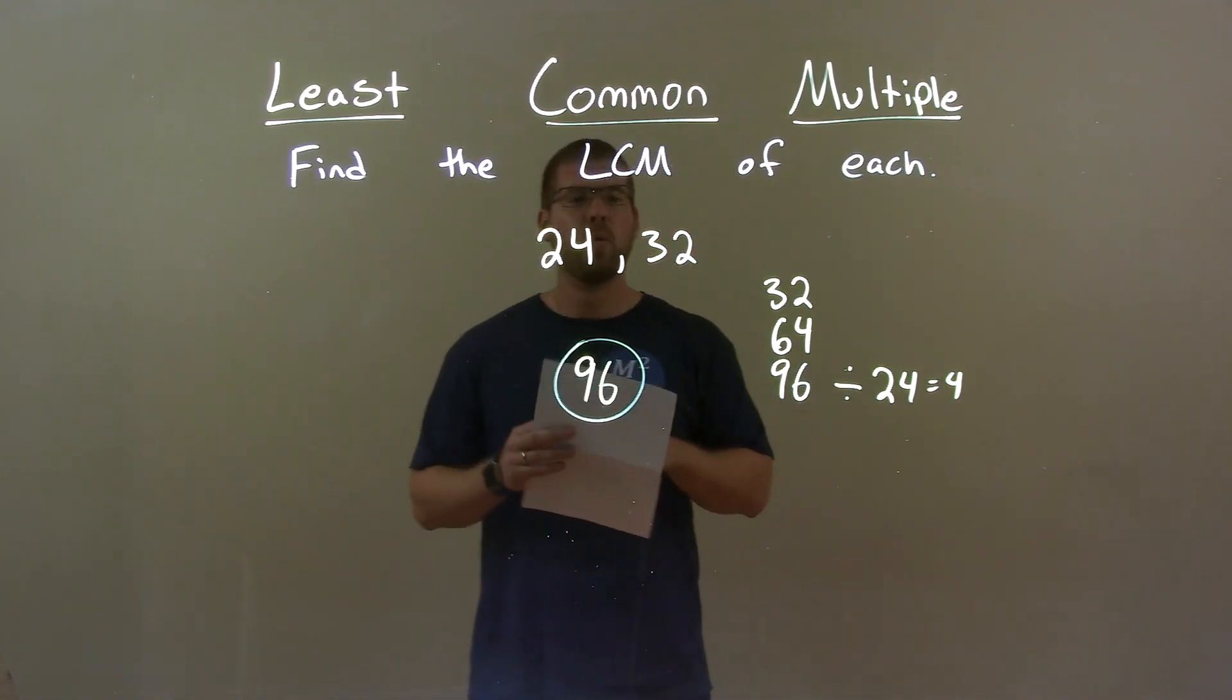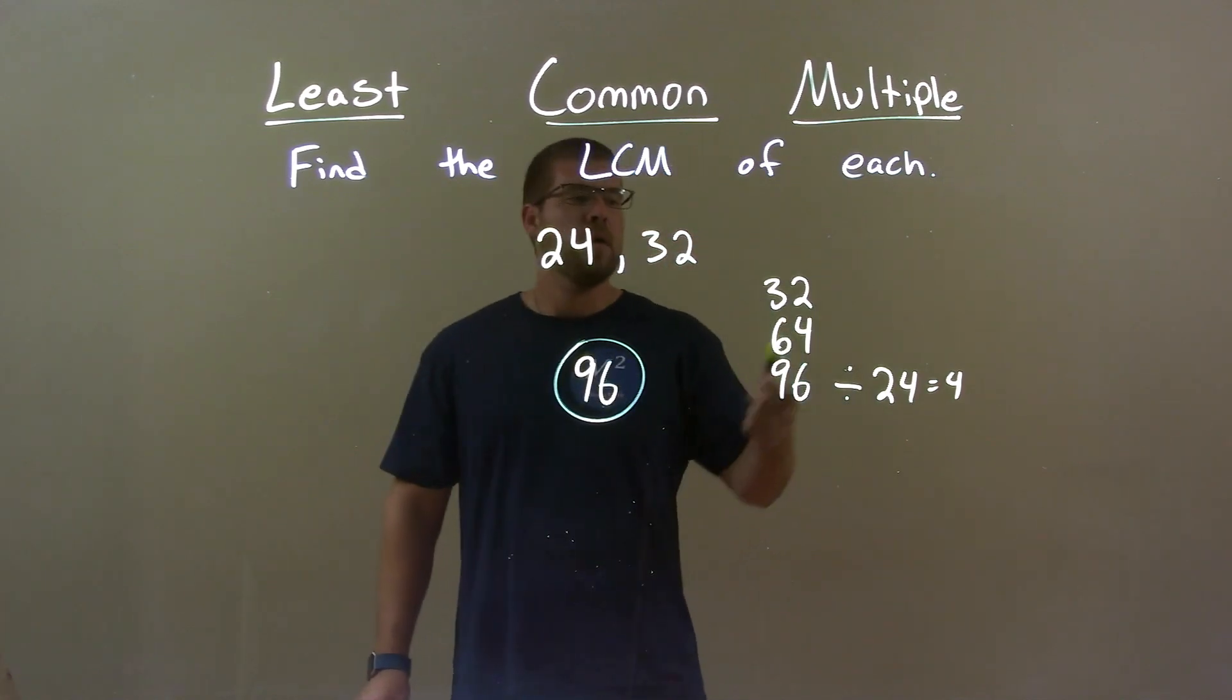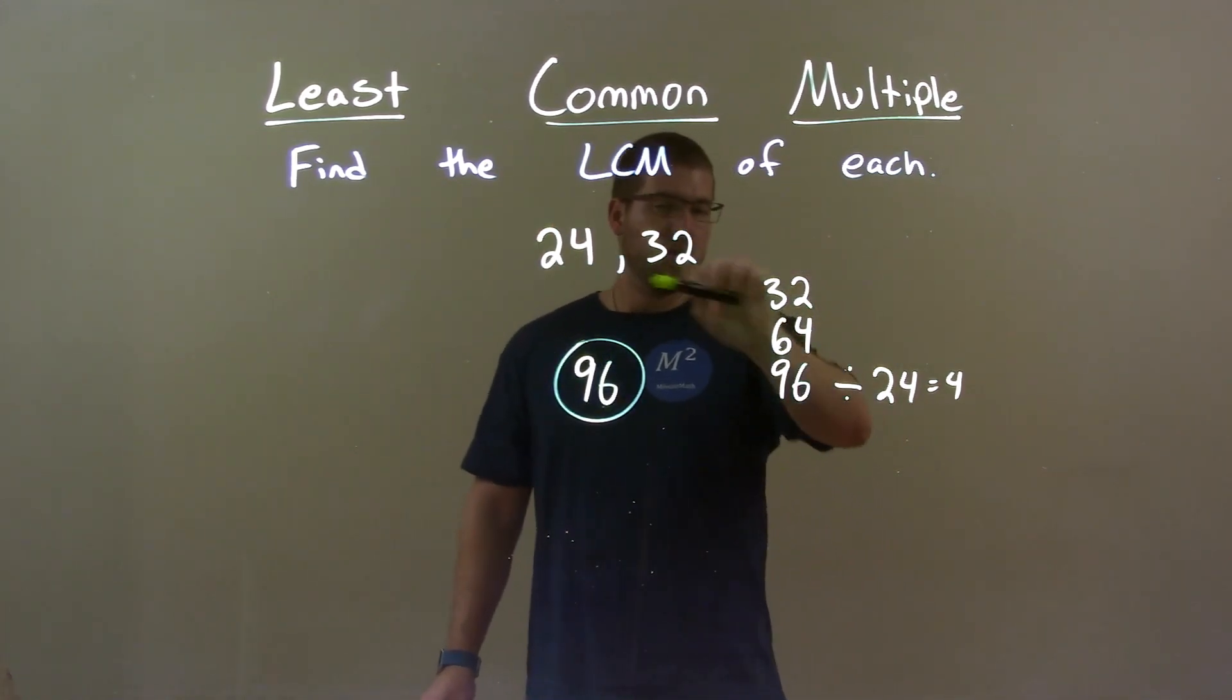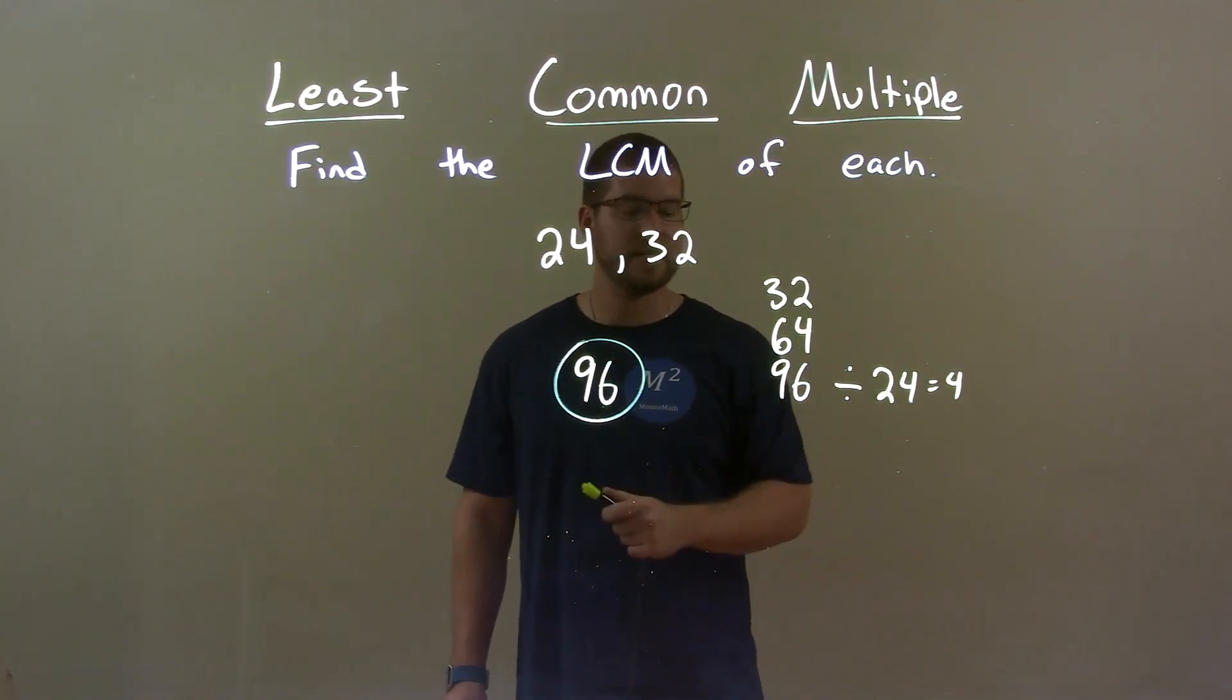Quick recap. Given 24 and 32, we need to find the least common multiple. I found the larger number, 32, and found its multiples. The smallest one of those multiples that is also divisible by 24 was 96, so my final answer is 96.